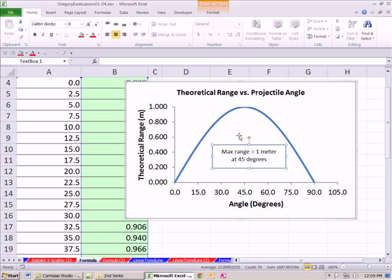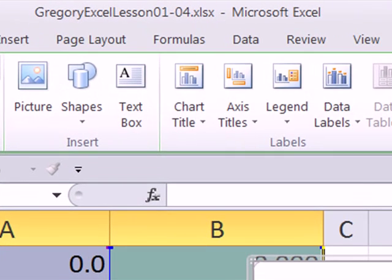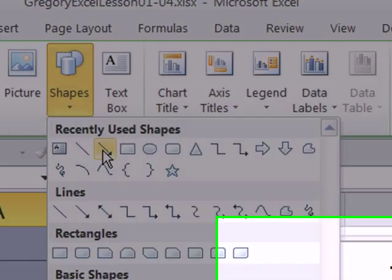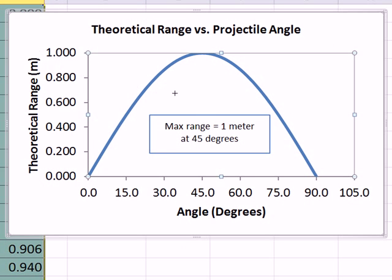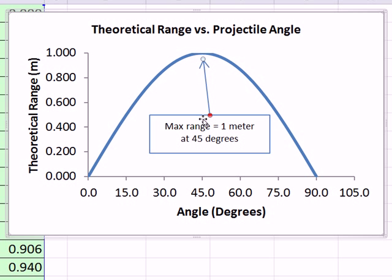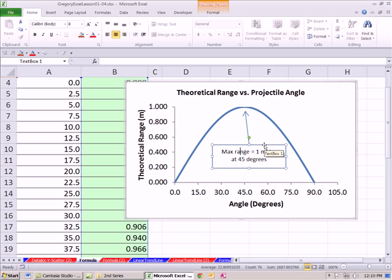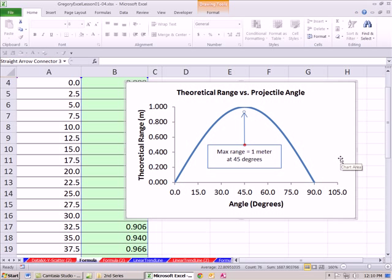Now I want to add an arrow shape pointing right up to the peak. Go to Layout, then Shapes. Just like the text box, when you click on the arrow shape it waits for you to draw it. I can point to the middle parts of the text box, and when I see the red connection indicator, click and drag to connect the arrow. I'll draw it pointing right to the center of the peak on the chart.